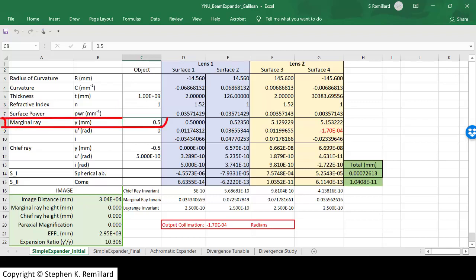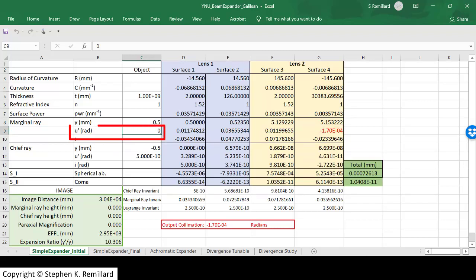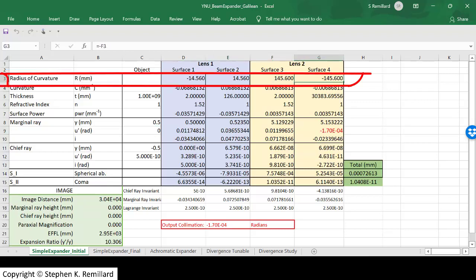We'll bring the marginal ray in at 0.5 millimeters above the optical axis, which means that when it comes out, it will be at 5 millimeters above. It has an incoming angle of 0. We don't have to be concerned about the chief ray until we get to aberration calculations later. Put in the radii of curvatures that we just calculated for the two lenses.